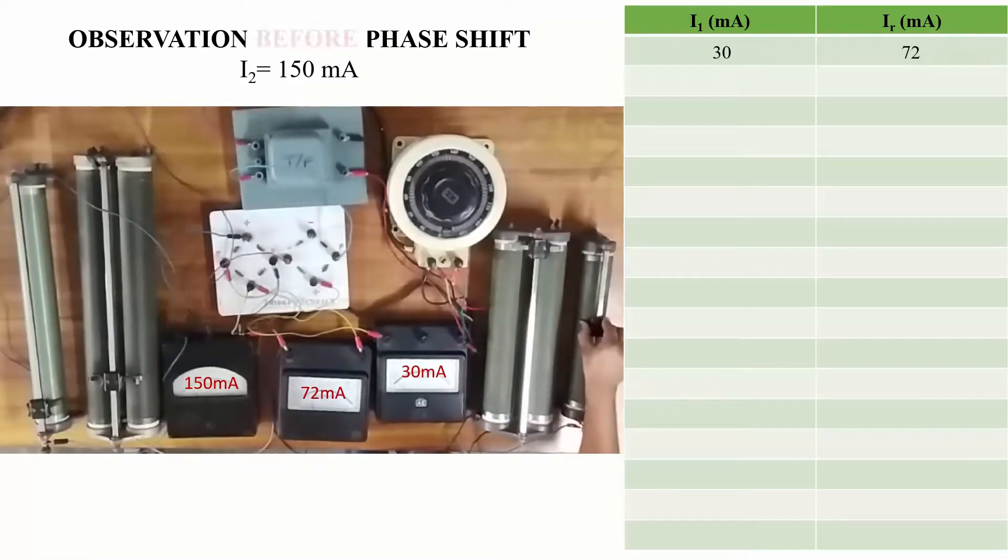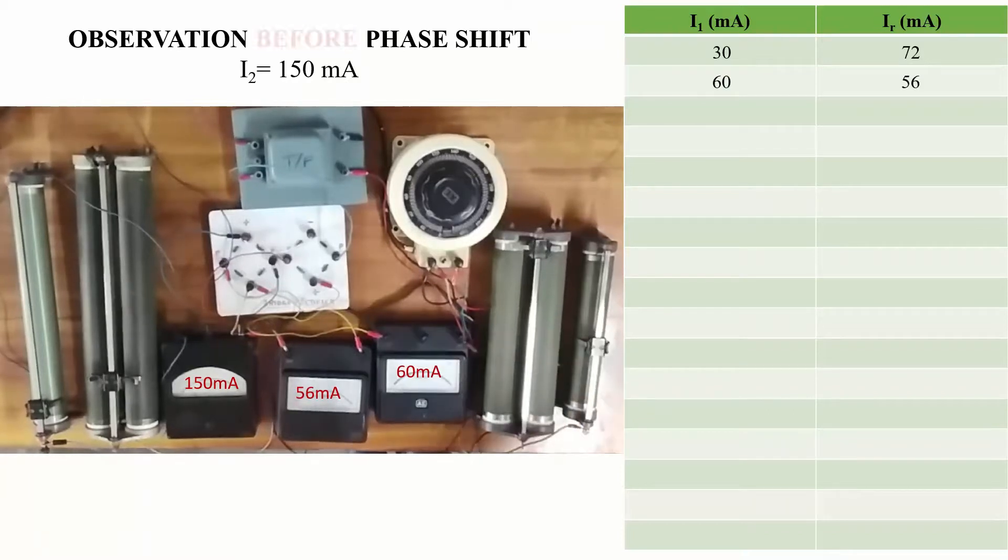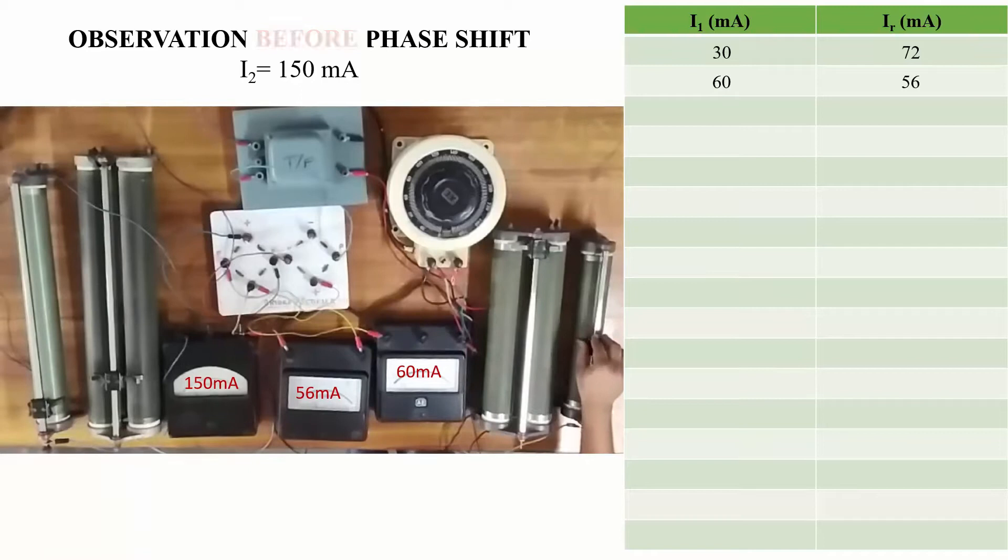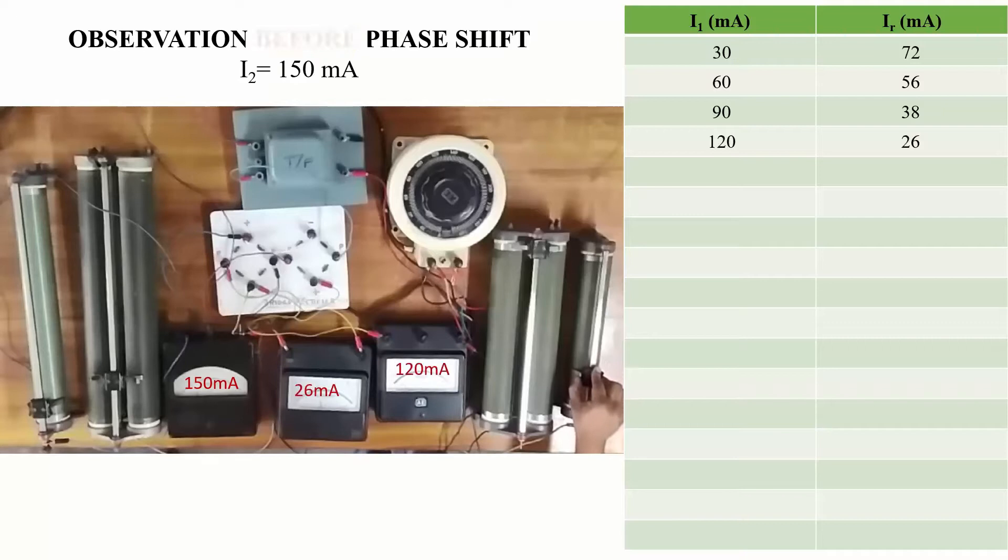Now we'll further vary I1 to 60 milliampere. This is the second set of readings. Then I1 will be taken as 90, so IR comes out equal to 38 milliampere.